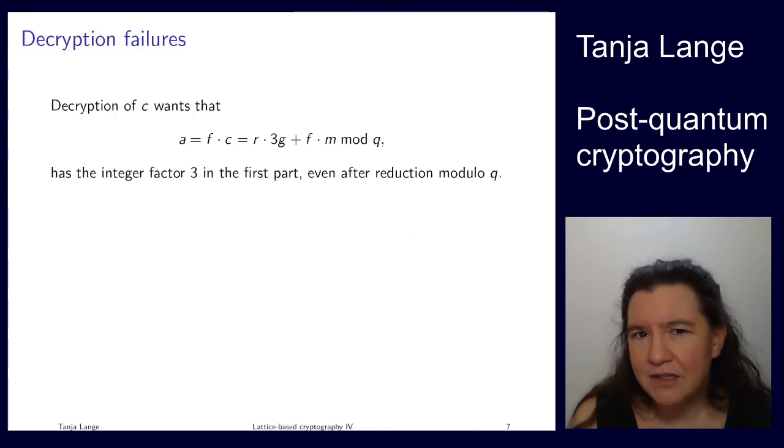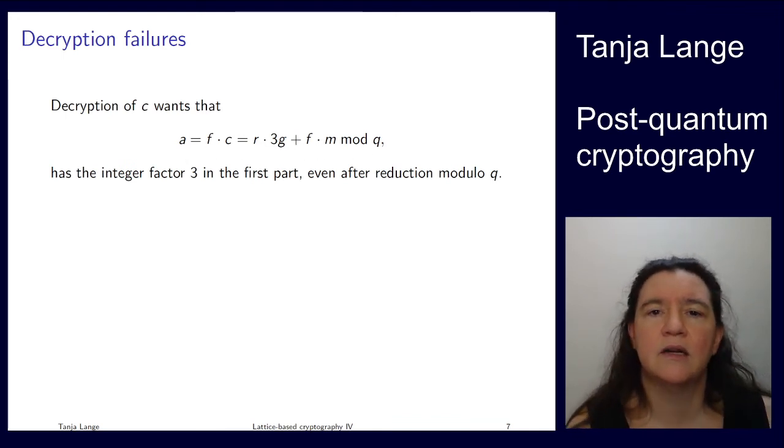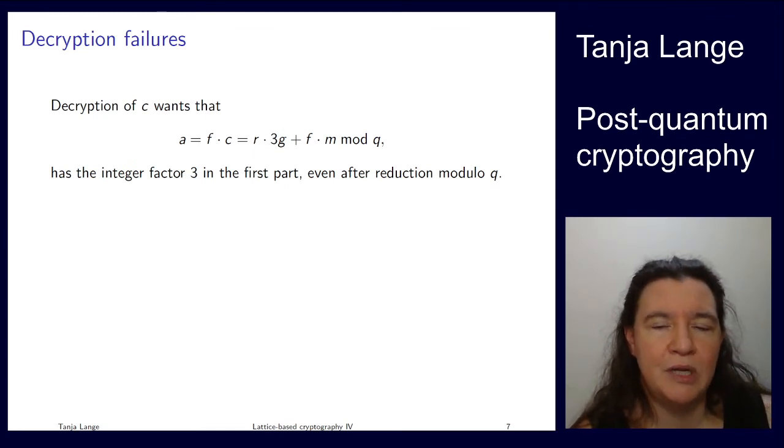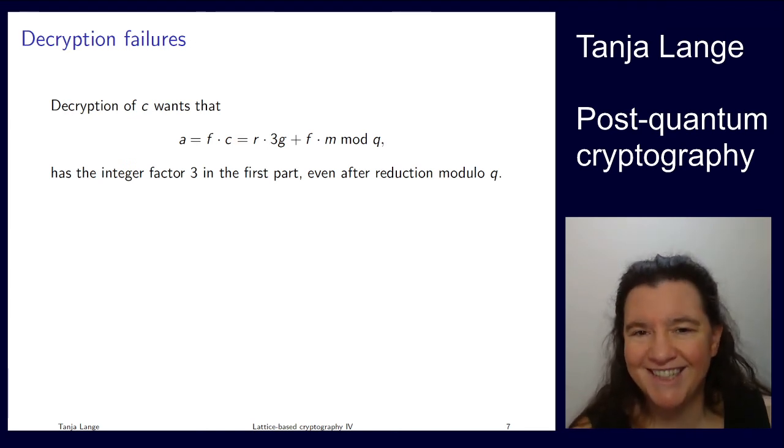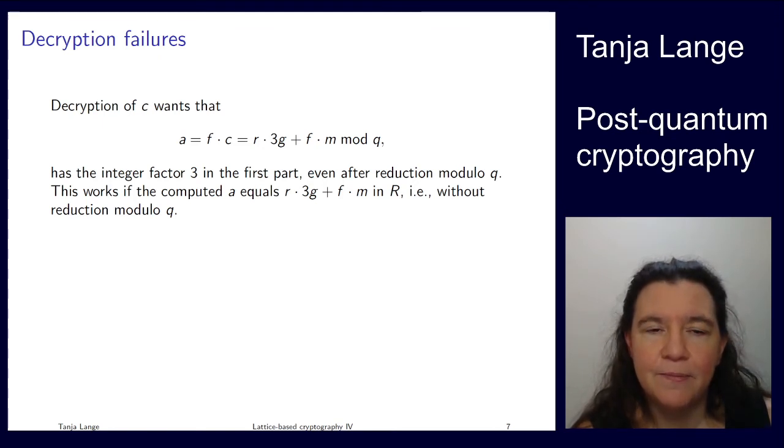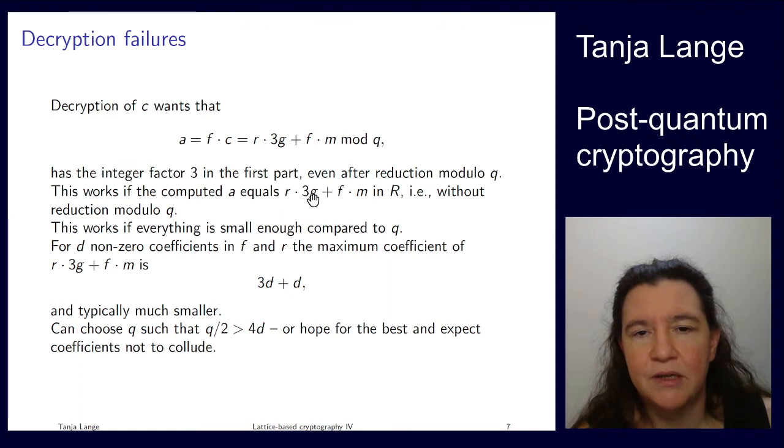So, how does this decryption work? I mean, here, that much is fine. Our a is, in fact, this thing here. Modulo q. But what I did in the next step, I cancelled this 3 here by computing mod 3. But it's a 3 mod q, which doesn't necessarily have a 3. There is one exception. Namely, if this reduction mod q doesn't actually appear. If this is actually holding over the integers. So, if everything is small enough. So, if everything is small enough, compared to q, then we really have a times 3 sitting around here. And then, reduction mod 3 removes this part, left us with f times m. We can multiply by f_3 and we get m.